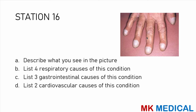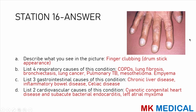Station 16: describe what you see in the picture and list causes. This is finger clubbing — there is a drumstick appearance. Four respiratory causes: COPD, lung fibrosis, bronchiectasis, lung cancers, pulmonary TB, mesotheliomas, and empyema. Three gastrointestinal causes: chronic liver disease, inflammatory bowel disease, and celiac disease. Two cardiovascular conditions: cyanotic congenital heart disease, acute bacterial endocarditis, and left atrial myxomas.